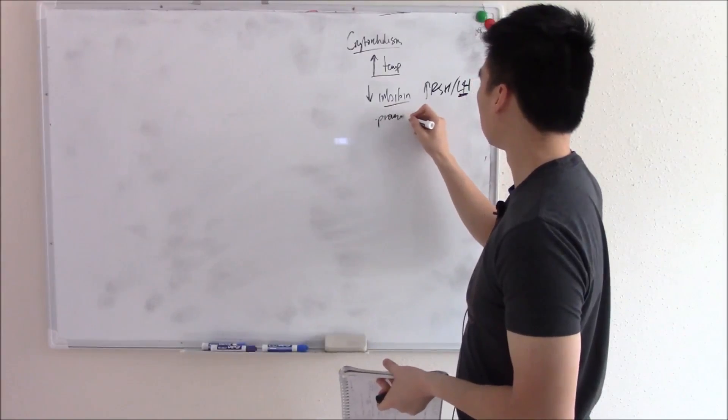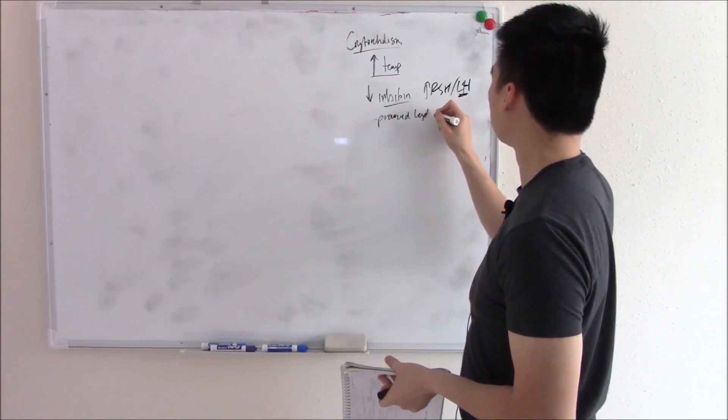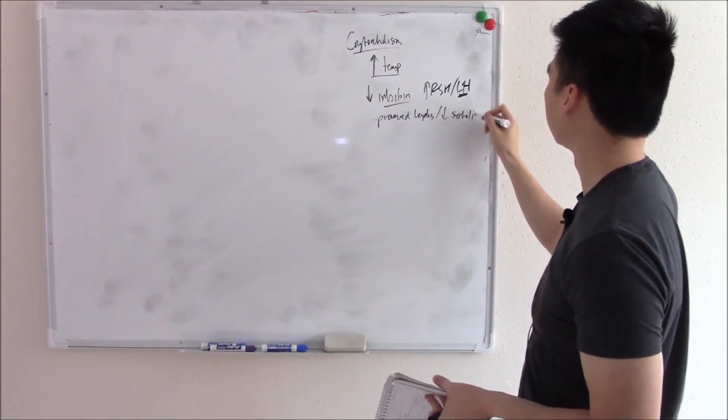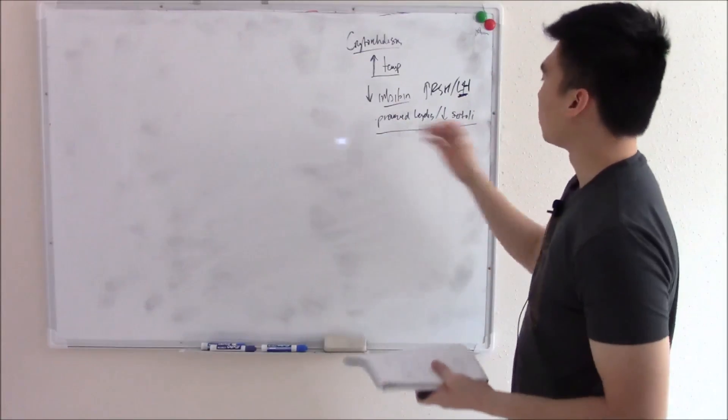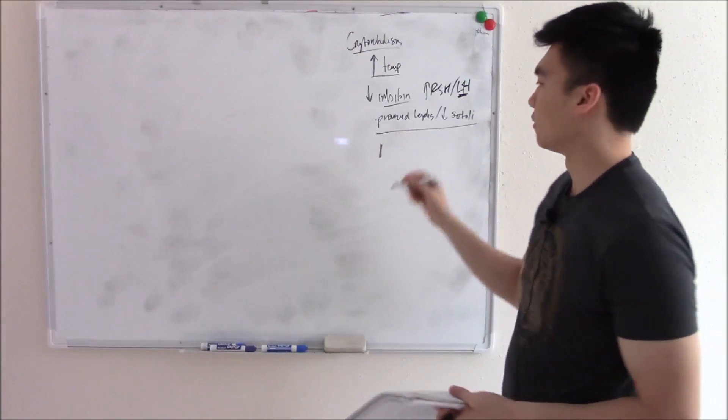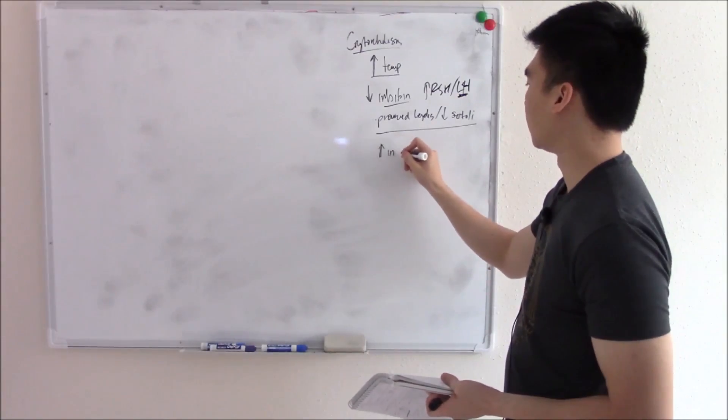So you have pronounced Leydig cells, pronounced Leydig, but decreased Sertoli cells. The culmination of which just makes your testes defunct. So you're going to have increased infertility.